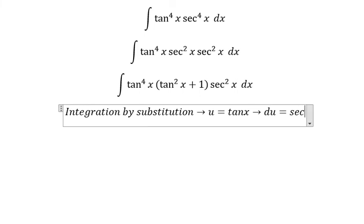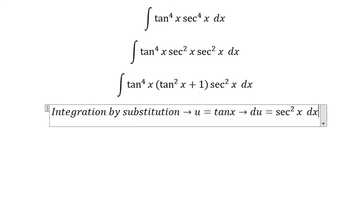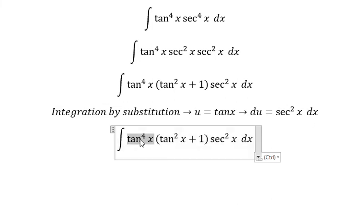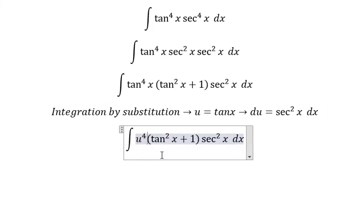Then du equals secant of x squared dx. This one we change for u, and this one we change for du: u to the power of 4 multiplied with u squared plus 1.